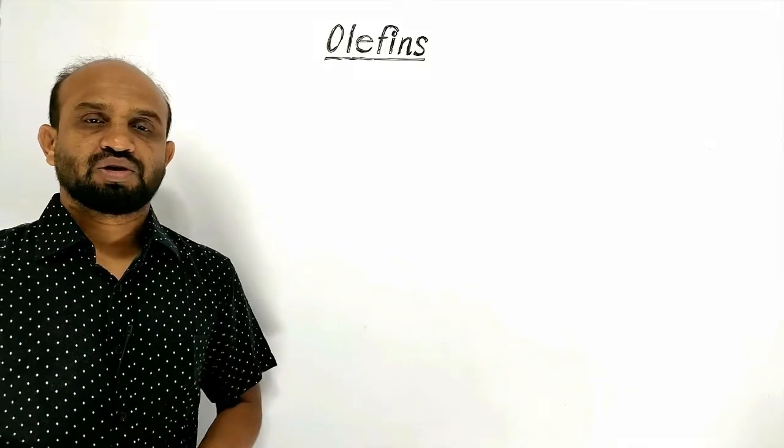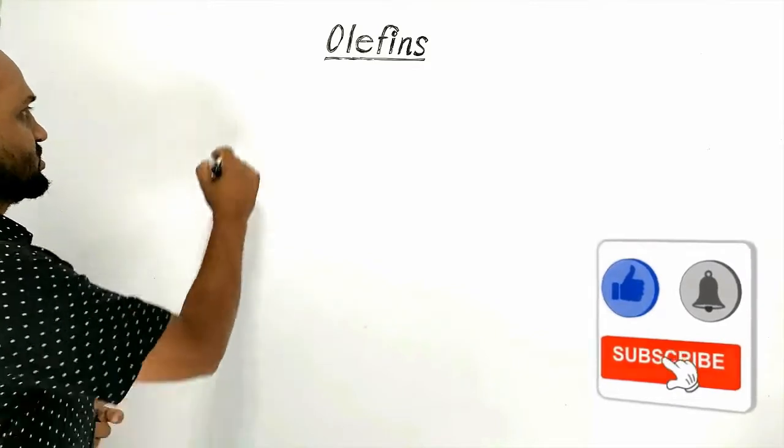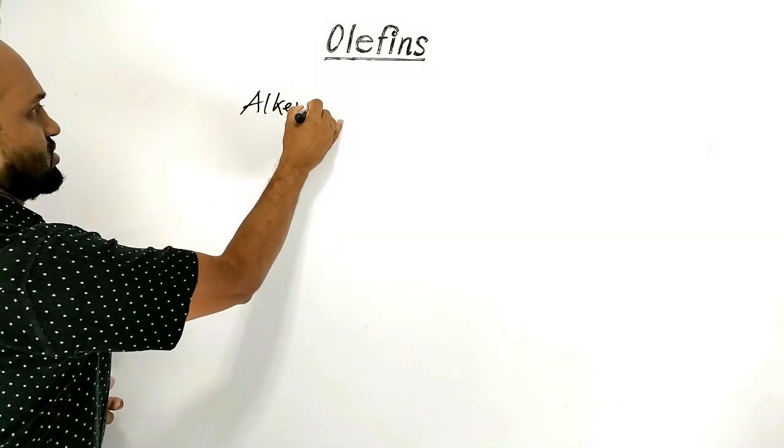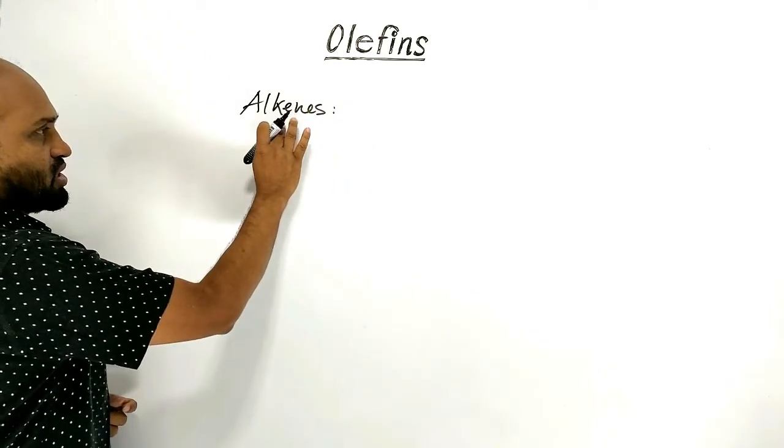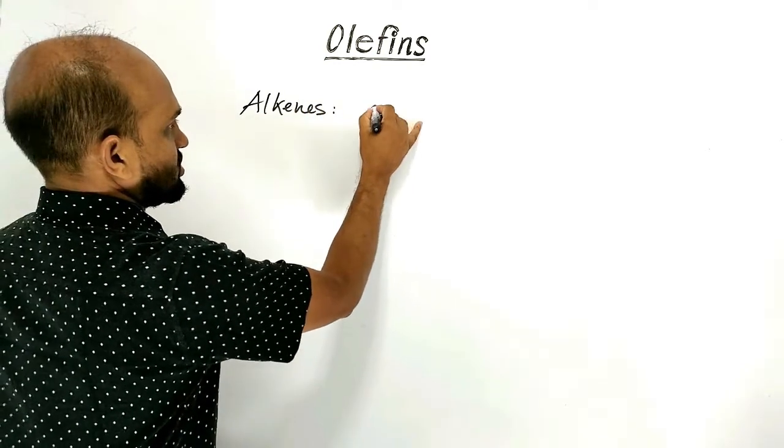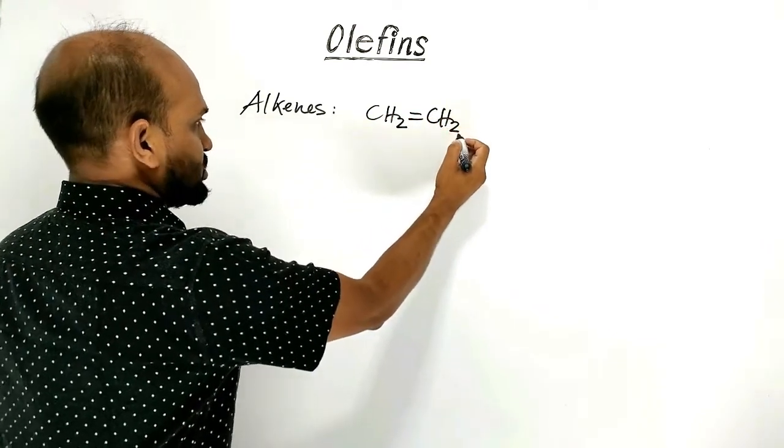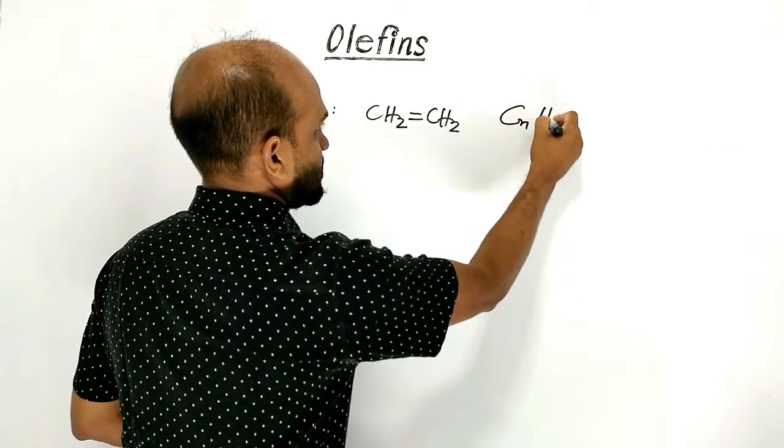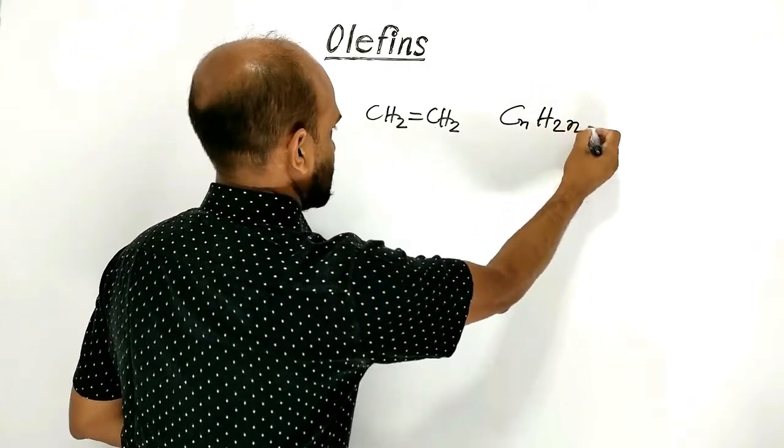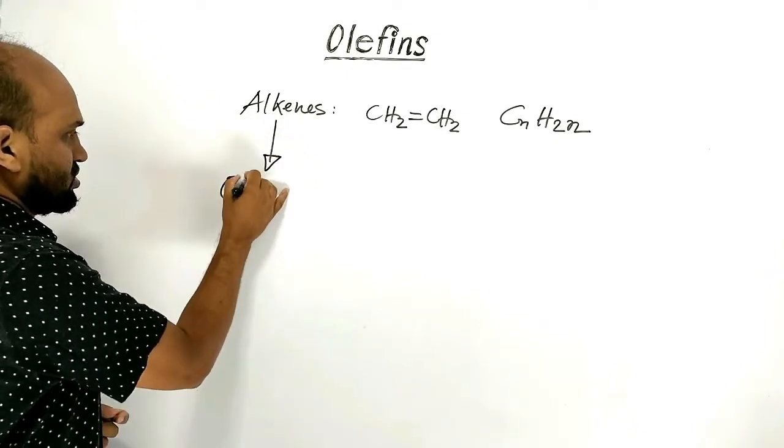First of all let's try to learn about alkenes. First member of alkenes is ethene. General formula of alkenes is C-N-H twice-N. These alkenes are called olefins.